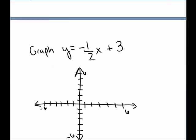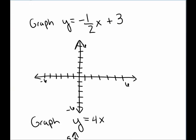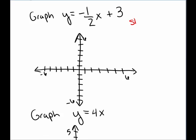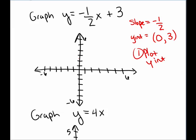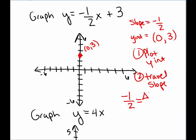Let's try again. We're going to graph the line y equals negative 1/2 x plus 3. I identify the slope is negative 1/2 and the y-intercept is the point (0, 3). The slope this time is negative 1/2 — that is change in y over change in x. So every time I go over 2 on the x, I will go down 1 on the y. Every time x increases by 2, the y decreases by 1.